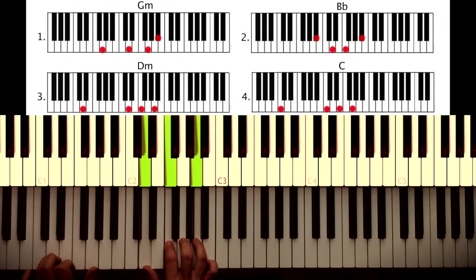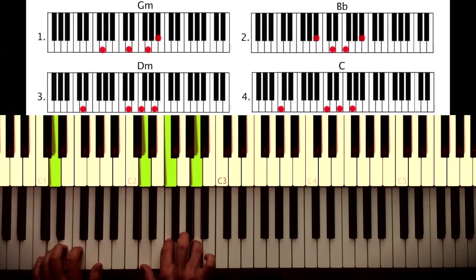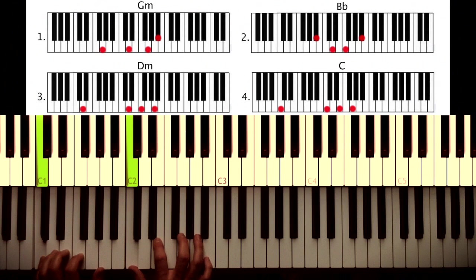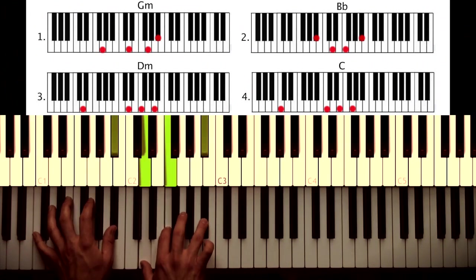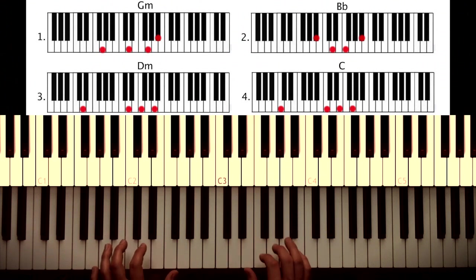Onto a D minor chord, so a D with your left hand and a D F A with your right hand, just a regular D minor, two three four. And then a C chord, just a regular C chord, C left, C E G. Really simple, right? Again, one two three four, two three four.